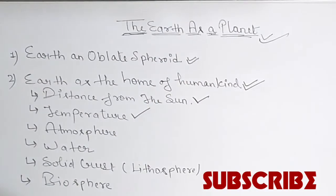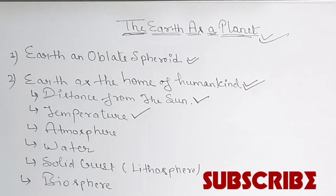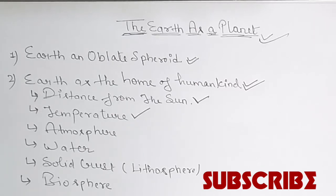The next factor is temperature. Since Earth is at the optimum distance from the Sun, it receives the correct amount of heat. The average temperature of the Earth is 17 degrees Celsius, which makes it suitable for life to exist. If the average temperature were to change by even a few degrees, that would cause the perishing of many species, as it would have an adverse effect on the life of living beings.